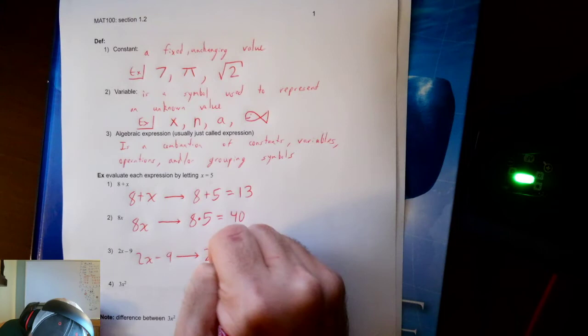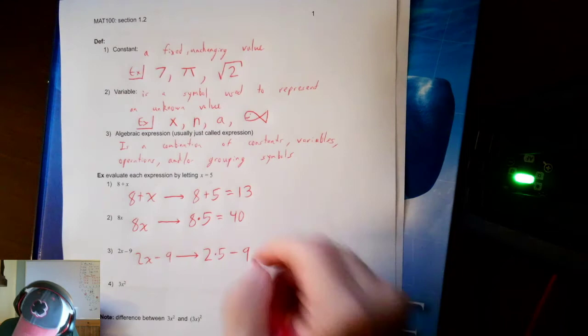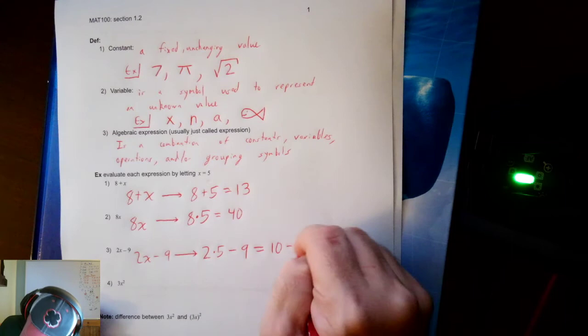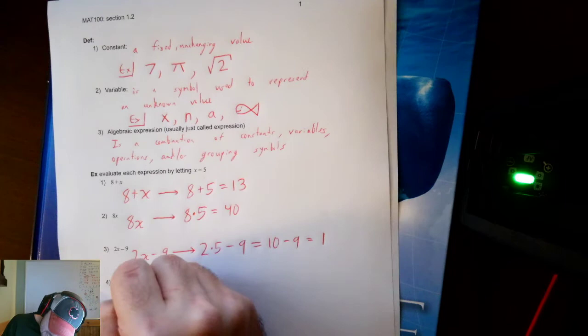Remember when we don't write the operation in between, it's considered to be multiplication. That's a shorthand mathematicians like to use. Next, 2x minus 9. Well that will translate to 2 times 5 minus 9. And then that equals—do I multiply or subtract? I multiply first. 10 minus 9, which gives me 1.